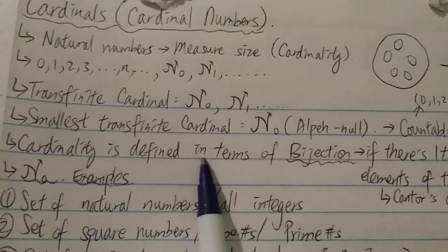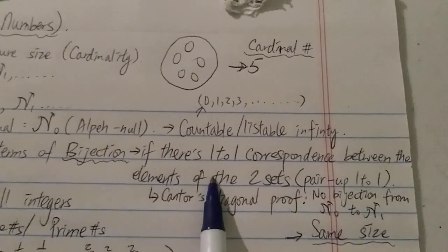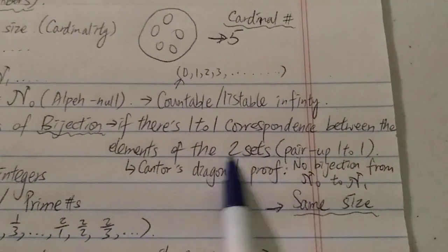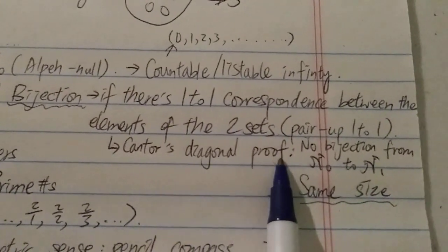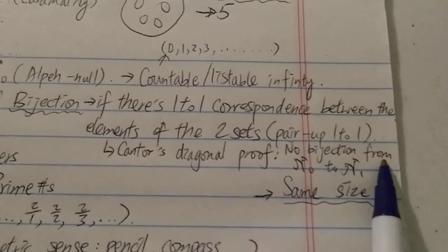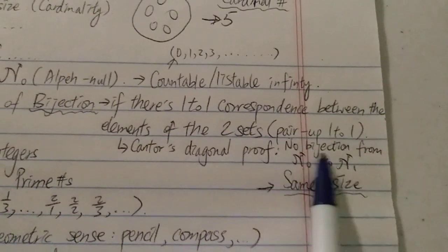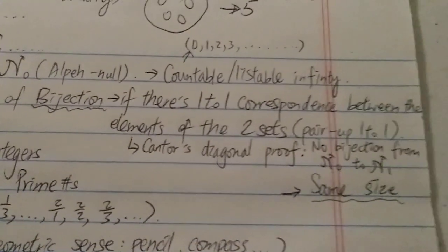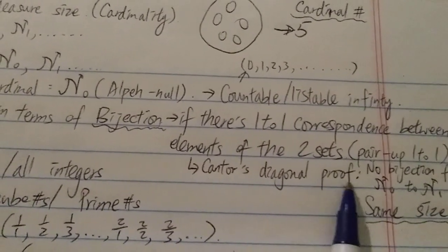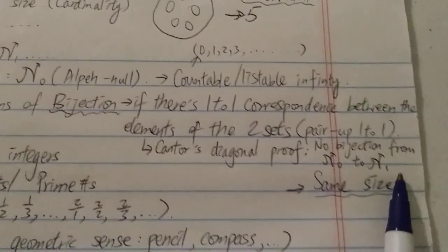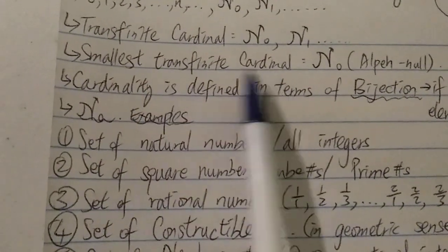Cardinality is defined in terms of bijection. Bijection basically means there's a one-to-one correspondence between the elements of two sets — you can pair the elements up one-to-one. The famous Cantor's Diagonal proof shows there is no bijection from aleph-0 to aleph-1, meaning they are not the same size. If you can pair items up one-to-one, they are the same size; if you cannot, they are different sizes. So aleph-0 and aleph-1 are different sizes, and aleph-1 is bigger.